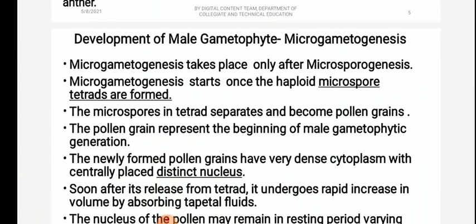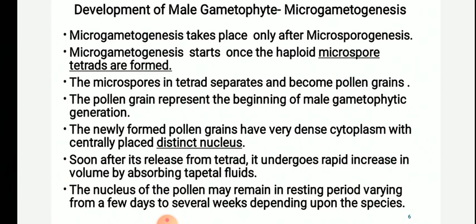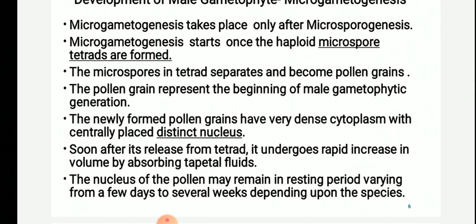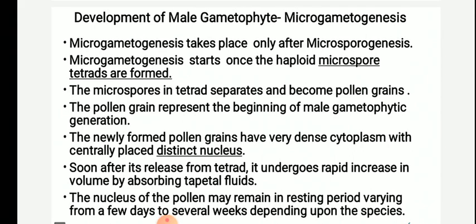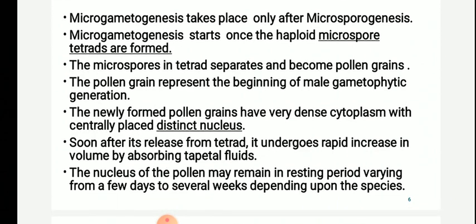Microgametogenesis takes place only after microsporogenesis. First, the pollen mother cell undergoes meiosis to form microspores, resulting in haploid pollen grains. The journey of this haploid pollen grain to produce two male gametes and a vegetative cell is called microgametogenesis. Microsporogenesis takes place first, where meiosis occurs in pollen mother cells to form microspores. Then these microspores undergo two mitoses to produce two male gametes and a vegetative cell. Microgametogenesis starts once the haploid microspore tetrads are formed.